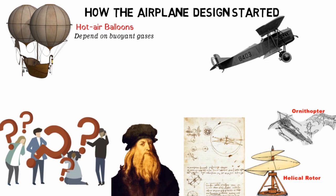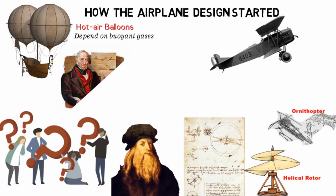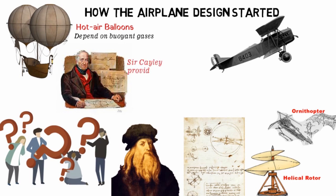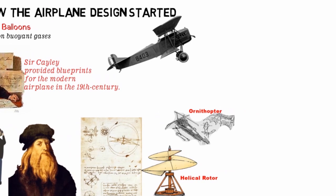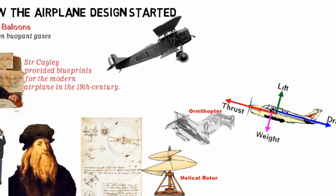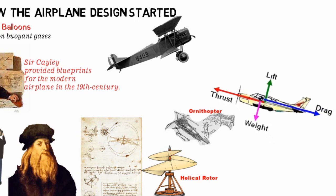Where da Vinci's flying machines left most wonderstruck, others investigated. English engineer Sir George Cayley, known as the Great Aeronautic Investigator, provided the blueprints for the modern airplane in the 19th century. Through his successful flight of the first manned hang glider in 1804, Sir Cayley discovered the concept of four aerodynamic forces used until today: thrust, drag, lift, and weight.